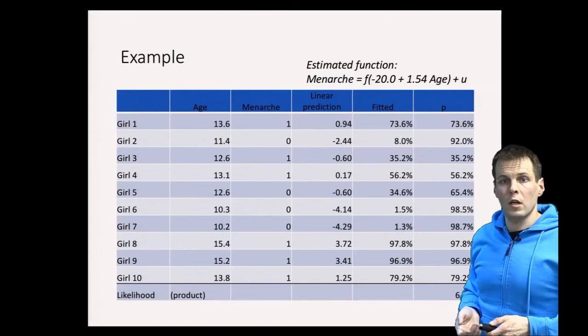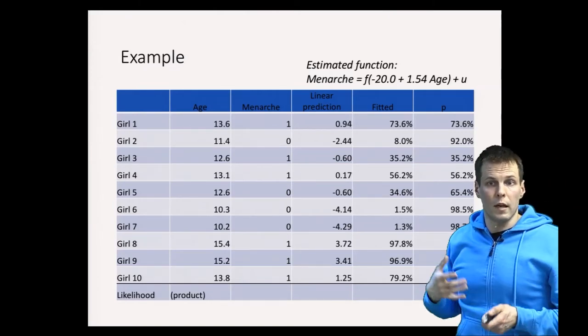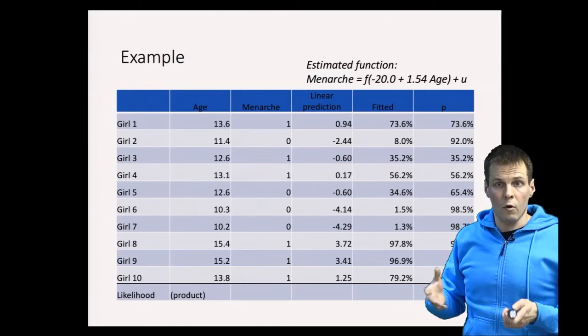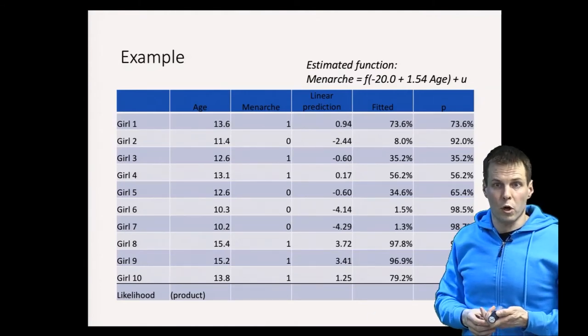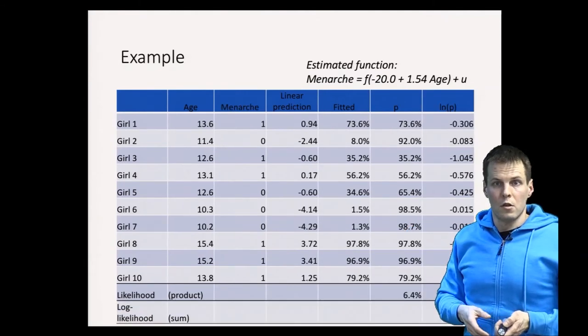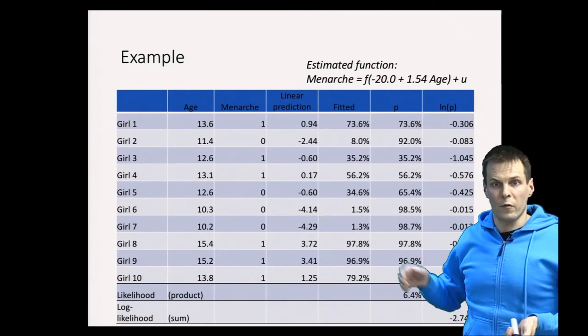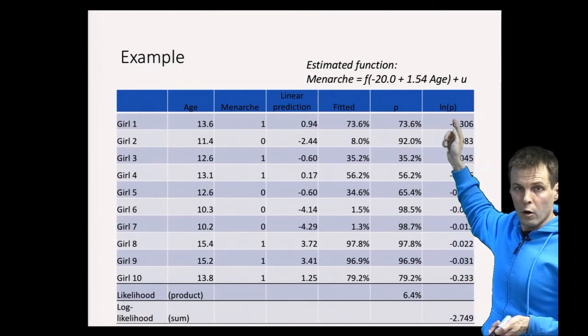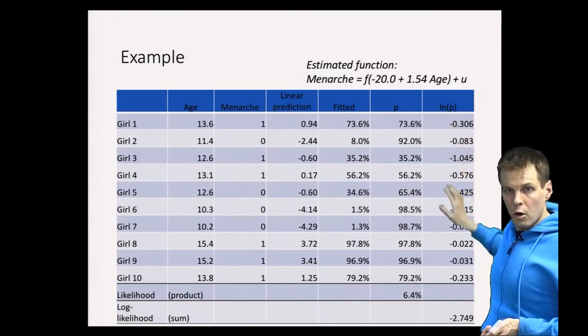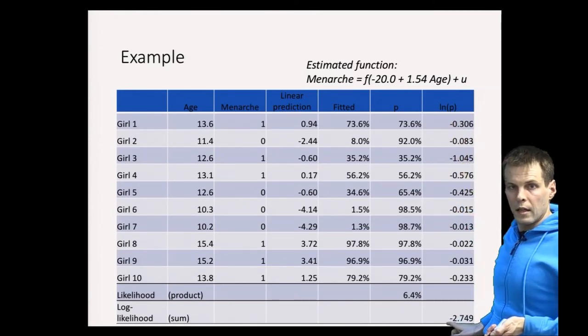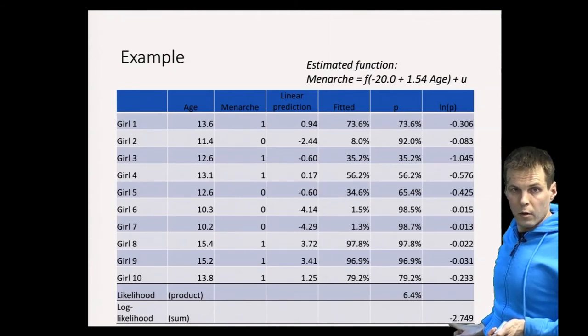For computational reasons, we don't typically work with these raw likelihoods and multiply them together. Instead, we work with logarithms. We calculate the logarithm of the likelihood, called the log likelihood, for each individual observation, and we take the sum of these log likelihoods. That gives us the full log likelihood of the sample.